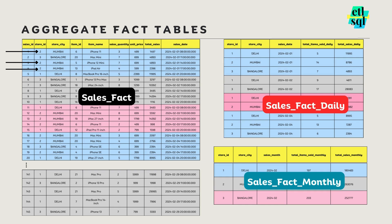For example, for store ID 2 on February 1st there were three records in the transactional table, but in sales_fact_daily there is just one record for store ID 2 for February 1st. We are aggregating the data across all stores and all dates to make a daily aggregated fact table. Similarly, we can make a monthly sales fact table — instead of aggregating at the date level, we aggregate at the month level.